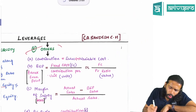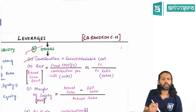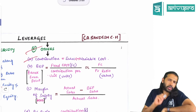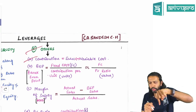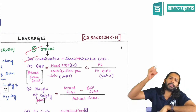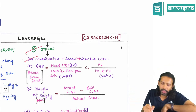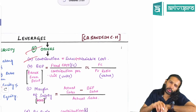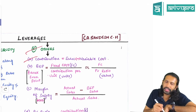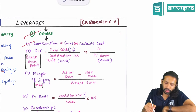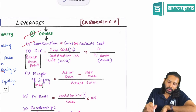Some common formulas helpful for problems: contribution equals sales minus variable cost. Break-even point can be found in units or in value. In units, it is fixed cost divided by contribution per unit. PV ratio is calculated as contribution divided by sales, multiplied by 100.